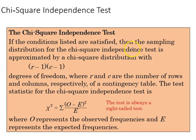If the conditions are met, then the sampling distribution for the chi-square independence test is approximated by a chi-square distribution with r minus 1 times c minus 1 degrees of freedom, where those are the rows and columns. You'll recall before, with the goodness of fit, when we were looking at one variable, it was simply the categories.